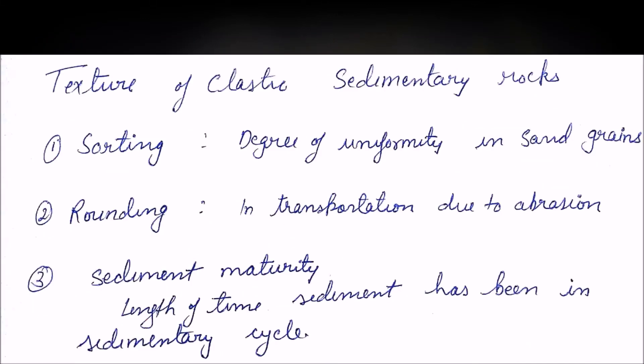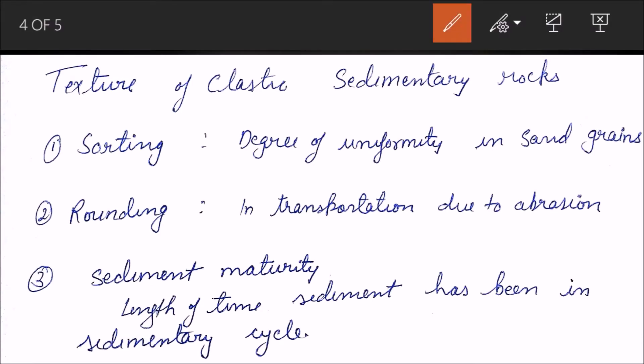Moving on, we have texture of clastic sedimentary rocks. Texture includes sorting. What is sorting? The degree of uniformity in sand grains. If all the grains are of same size within a rock, it is said to be well sorted. If they are irregular, like there is a big boulder present with all small rocks or small size sediments around it, then it is poorly sorted.